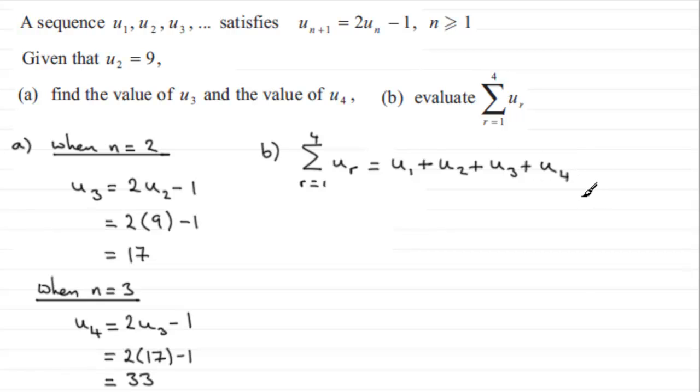Problem is we haven't got the first term u₁, but we can get that because we already know the second term is 9. So we know that when n equals 1, we've got u₂ which is the second term, 9 equals 2u₁ minus 1. And if we add 1 to both sides we therefore have 10 equals 2u₁. Divide both sides by 2 and you've got the first term in the sequence u₁ is equal to 5.